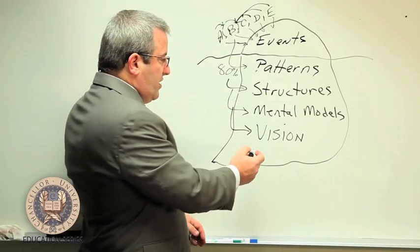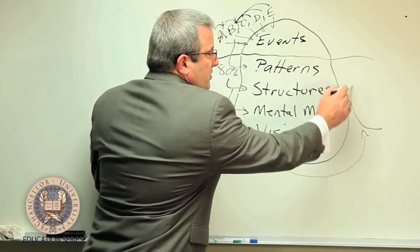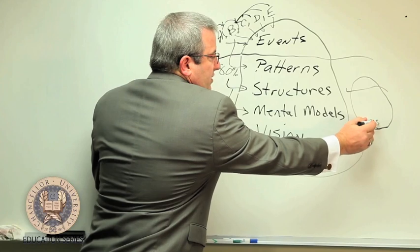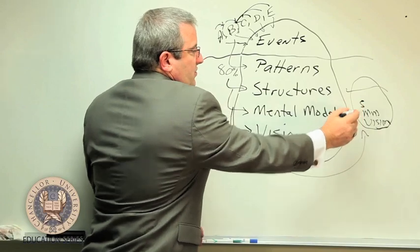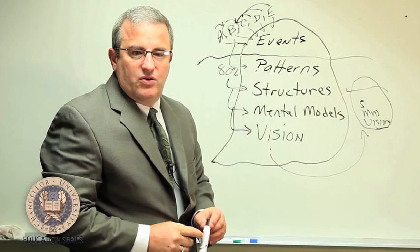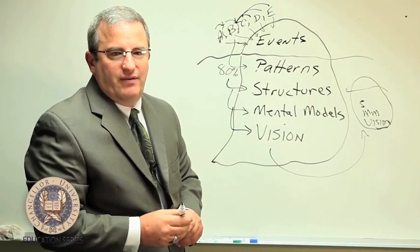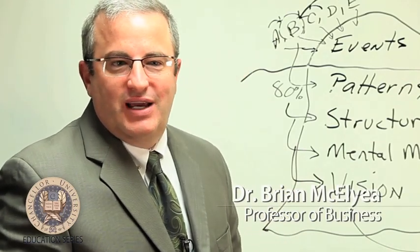If you want to create a new future, you have to turn the iceberg upside down and create a whole entire new iceberg over here with a new vision and then the new mental models and then new structures. As you move through this second iceberg, you create a new future for the community, for the organization, or what have you. Well, I hope you enjoyed this short segment on systems thinking. If you want to learn more, visit chancelloru.edu.